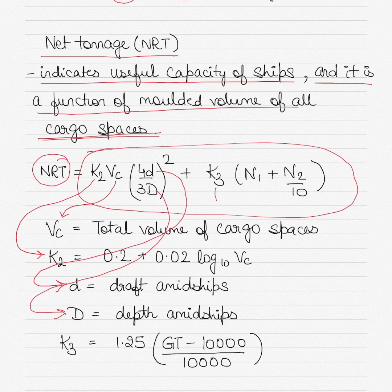Then we have K3, which is again another constant, which is equal to 1.25 multiplied by (gross tonnage minus 10,000) divided by 10,000 again.